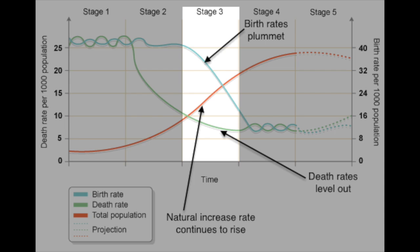Let's look at stage three of the demographic transition model. When we look at the graphic, we can immediately see that birth rates are plummeting, and the death rates are starting to level out. So our natural increase rate is going to start going down as well. This is mainly due to the Industrial Revolution — when people start moving into the cities to work in the factories, they begin to have fewer children.